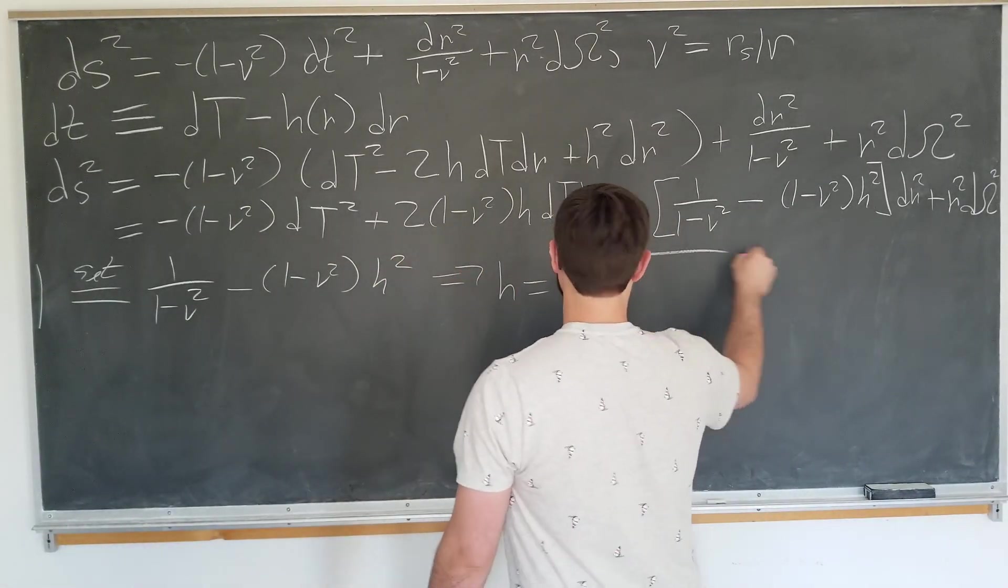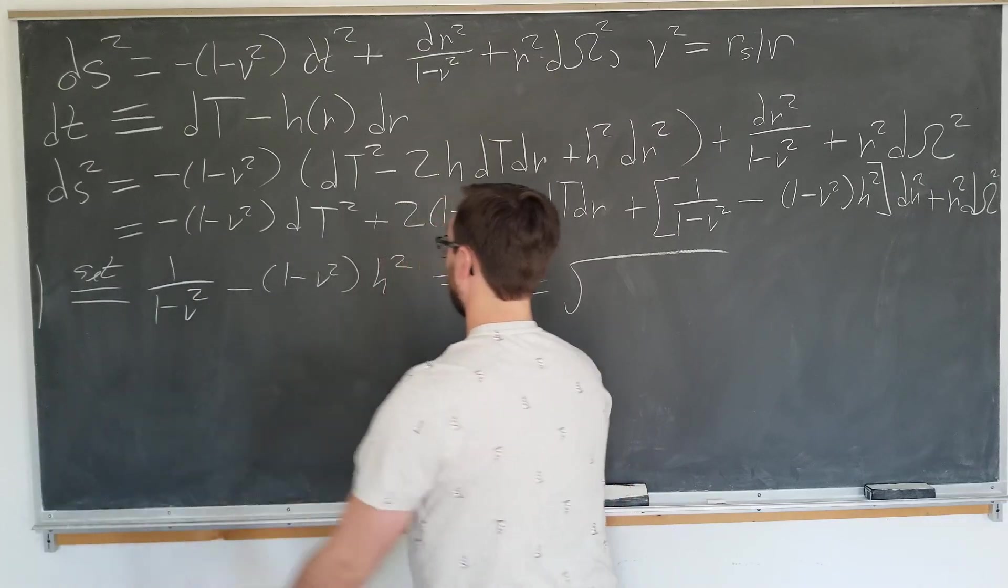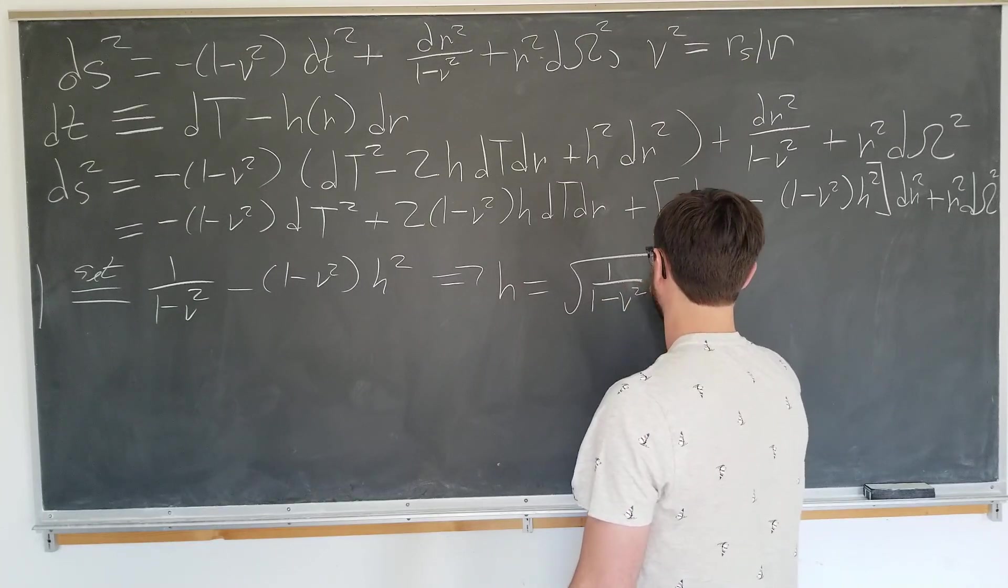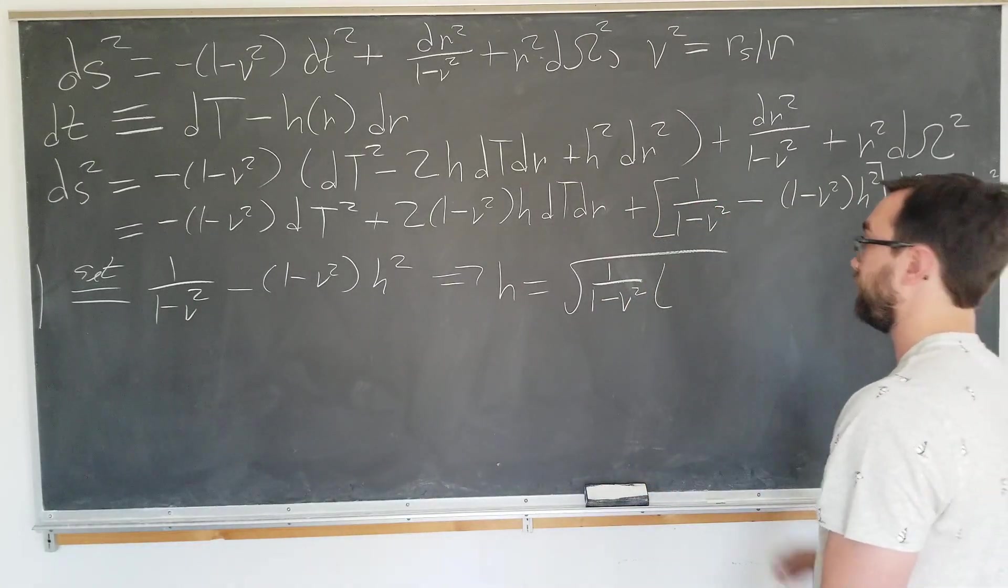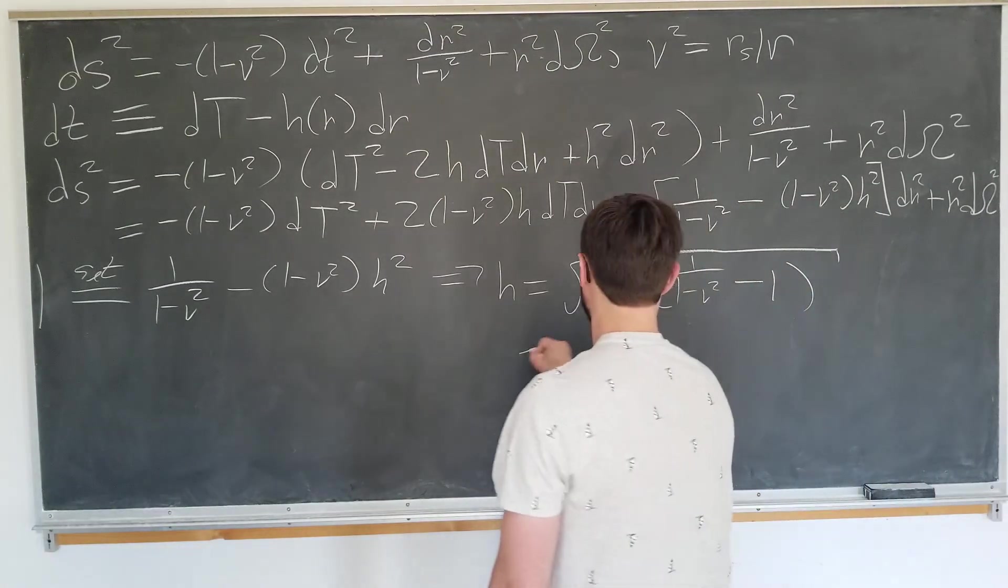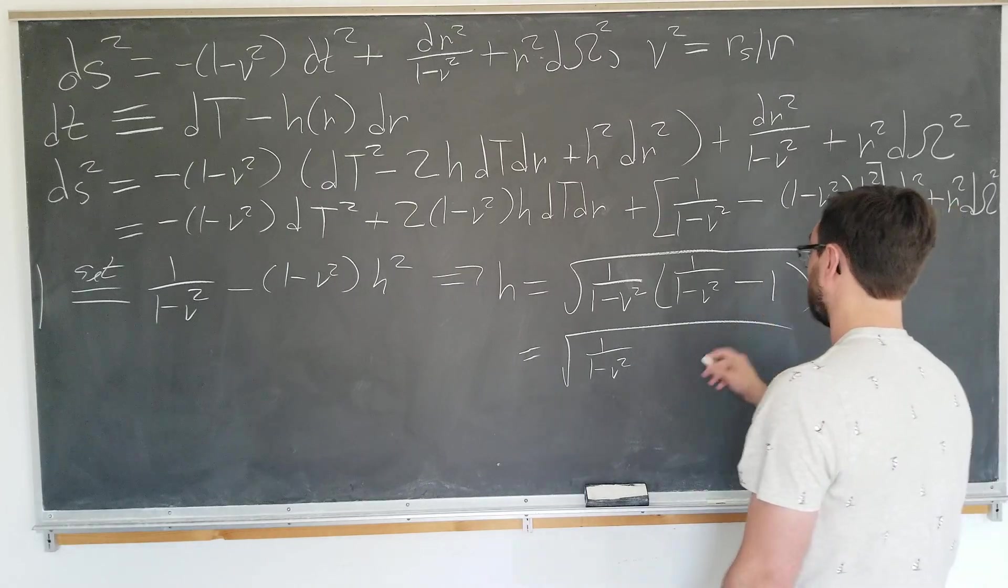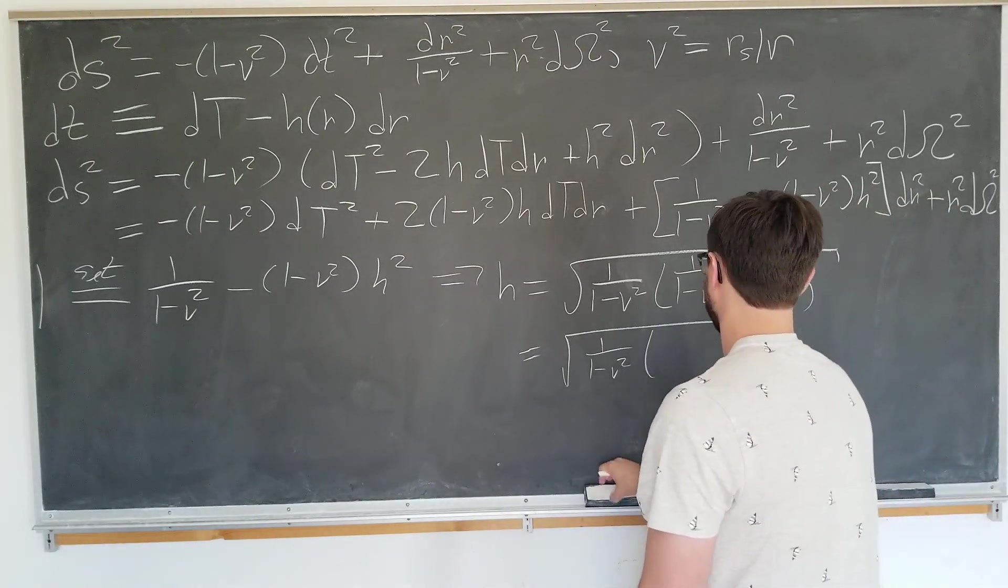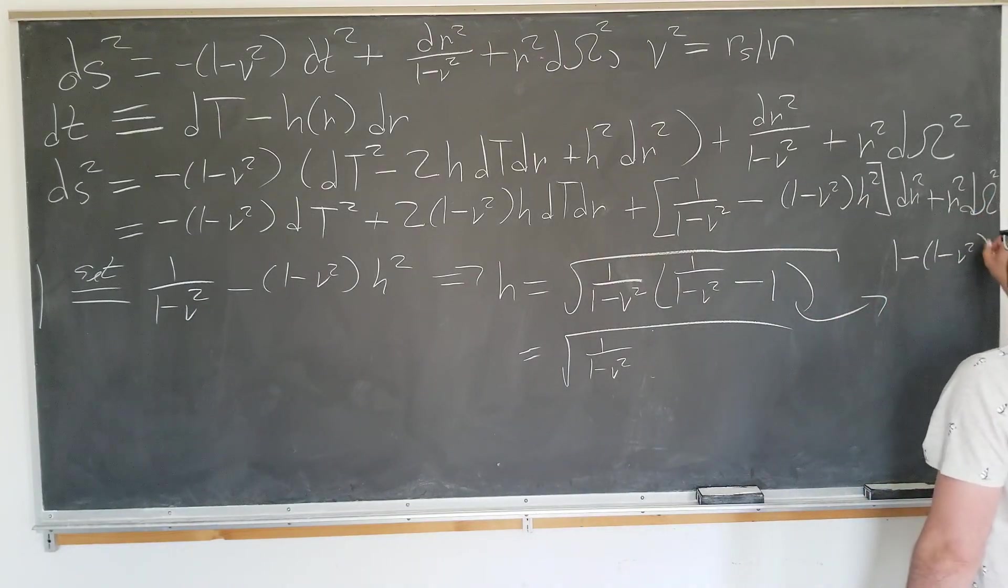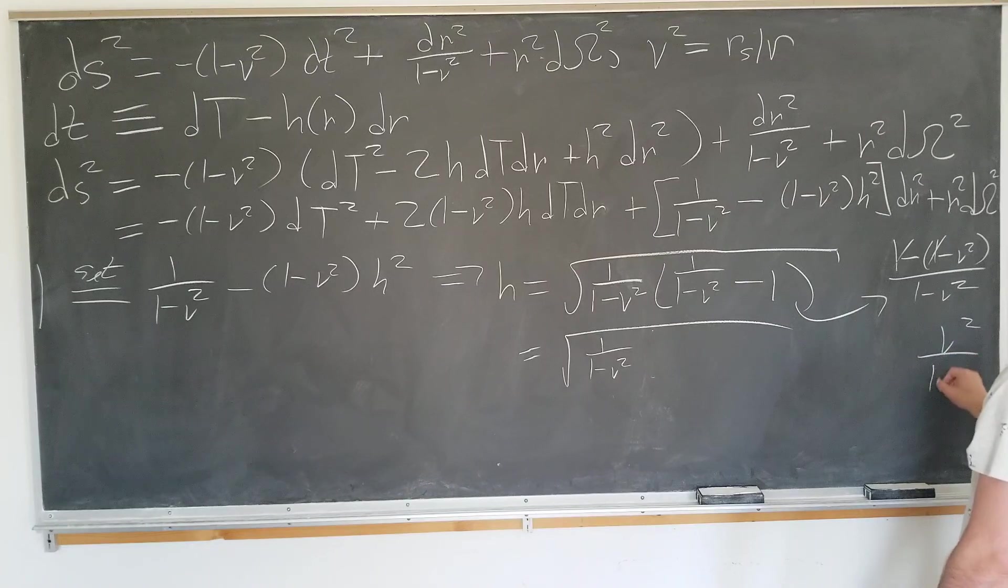h is going to be the square root. What we're going to do is take this term over to the other side, we're going to negate it and divide by 1 over 1 minus v squared. So this becomes 1 over 1 minus v squared minus 1, which we can simplify by putting this over a common denominator. This term becomes 1 minus 1 minus v squared over 1 minus v squared, which is just going to be v squared over 1 minus v squared.